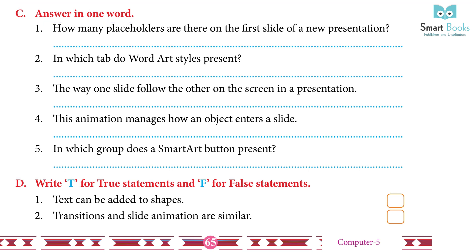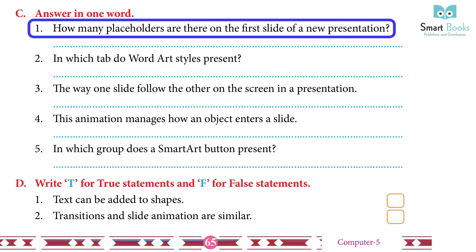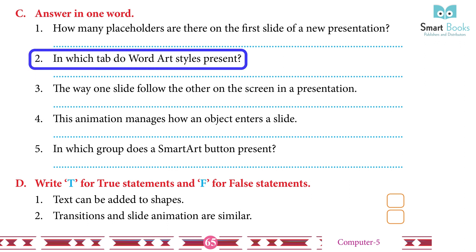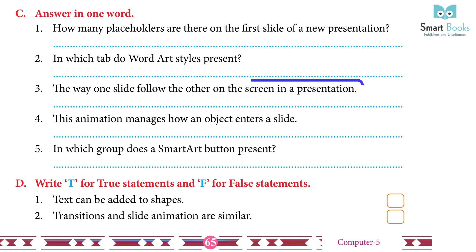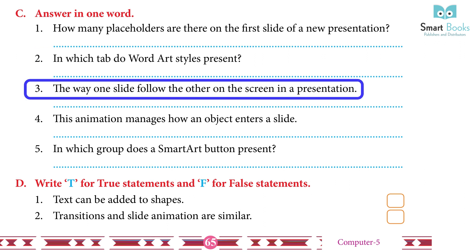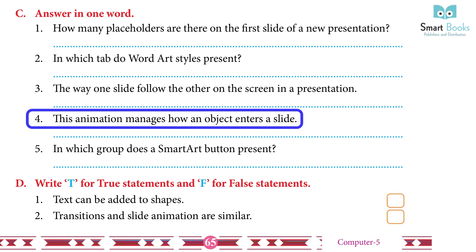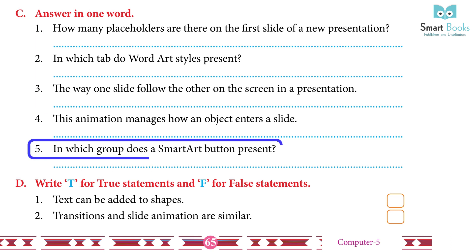Answer in one word: 1. How many placeholders are on the first slide? Answer: 2. 2. In which tab is word art style found? Answer: Format tab. 3. The way one slide follows the other on the screen. Answer: Transition. 4. This animation manages how an object enters a slide. Answer: Entrance. 5. In which group does the smart art button appear? Answer: Illustrations group.